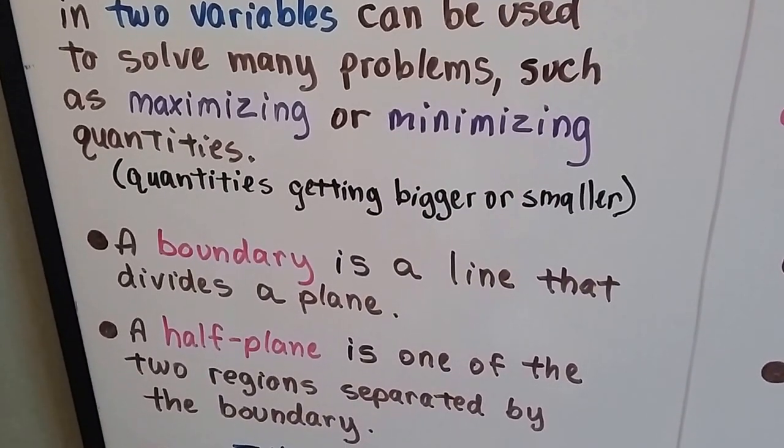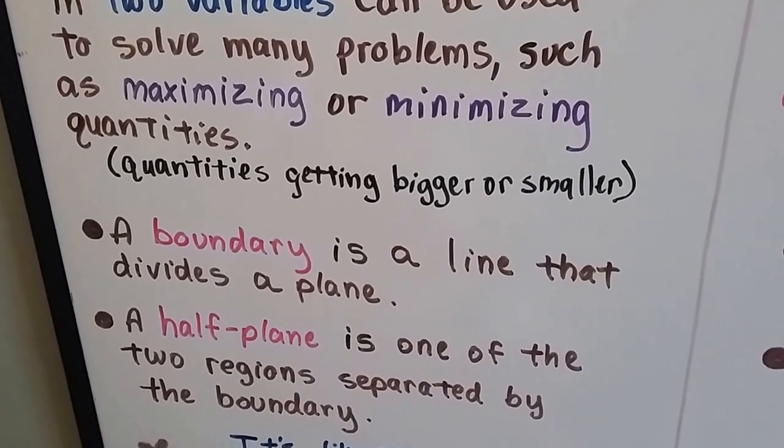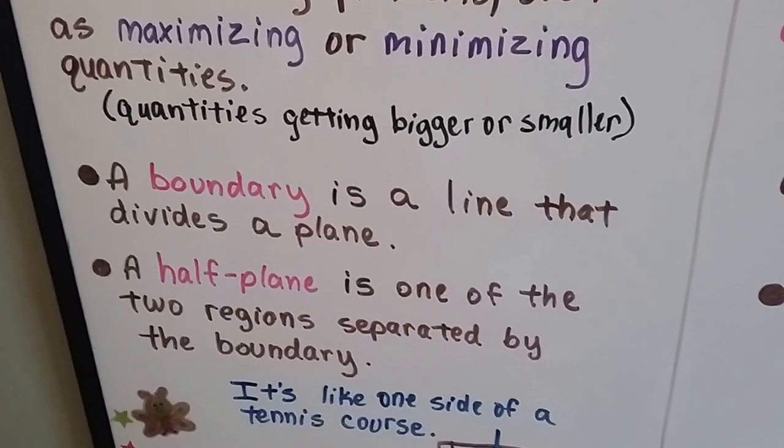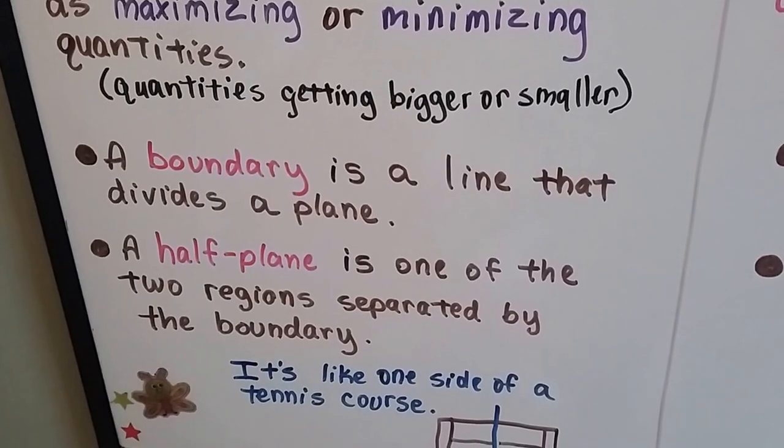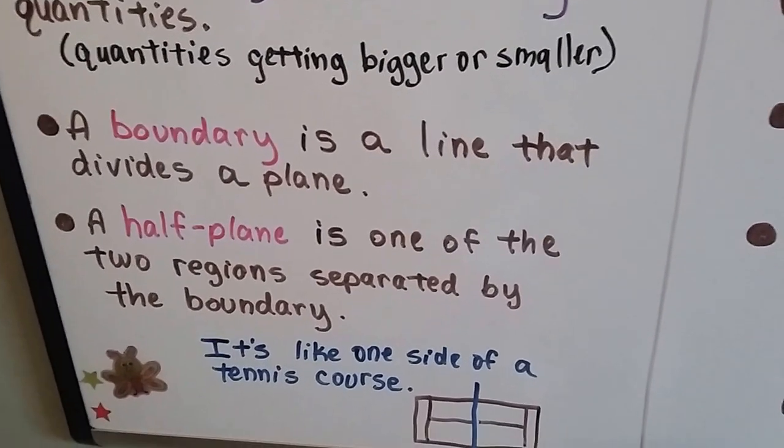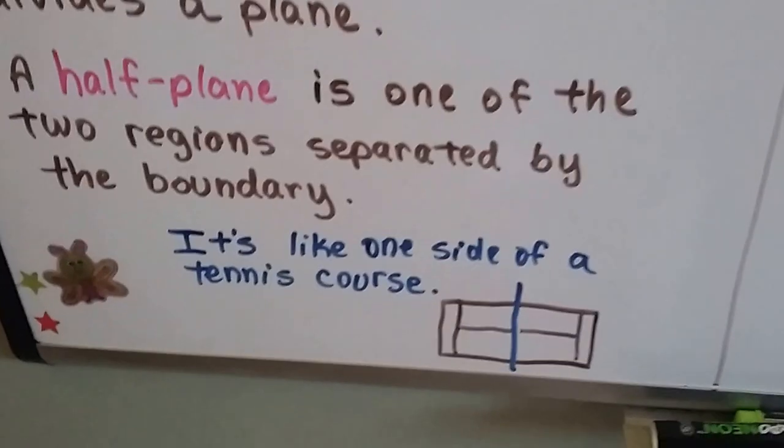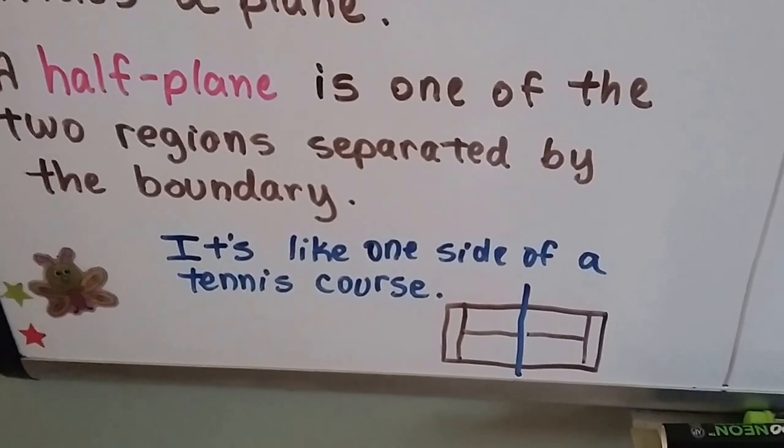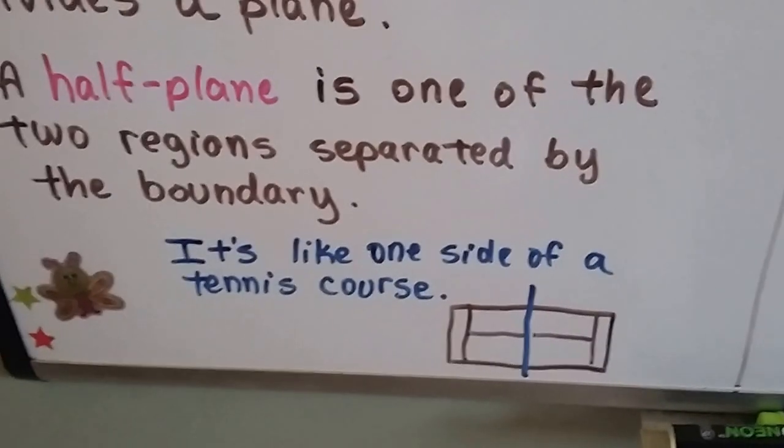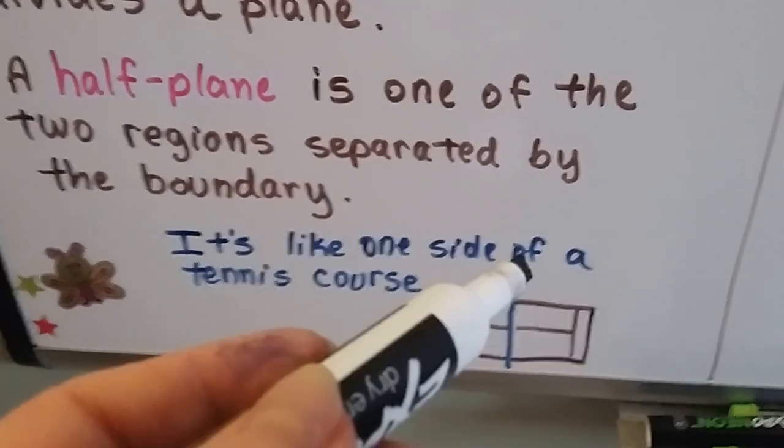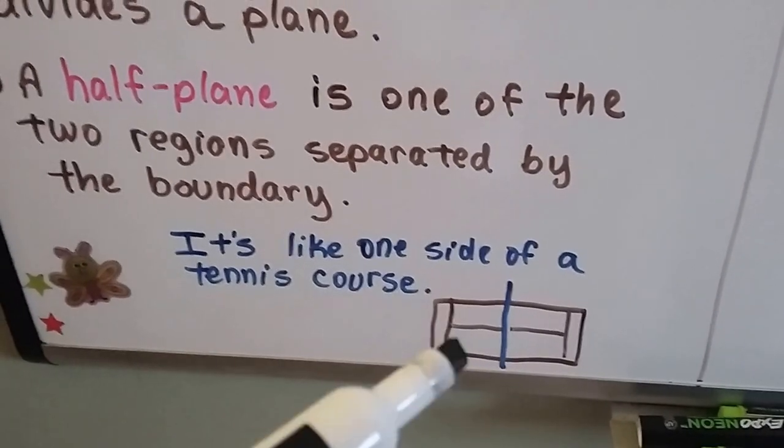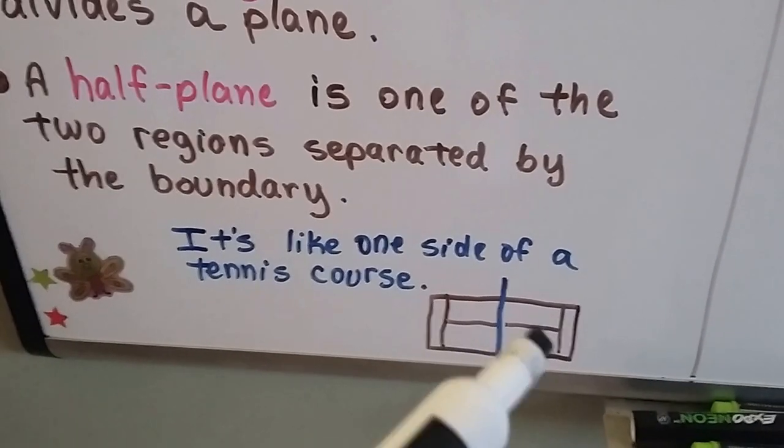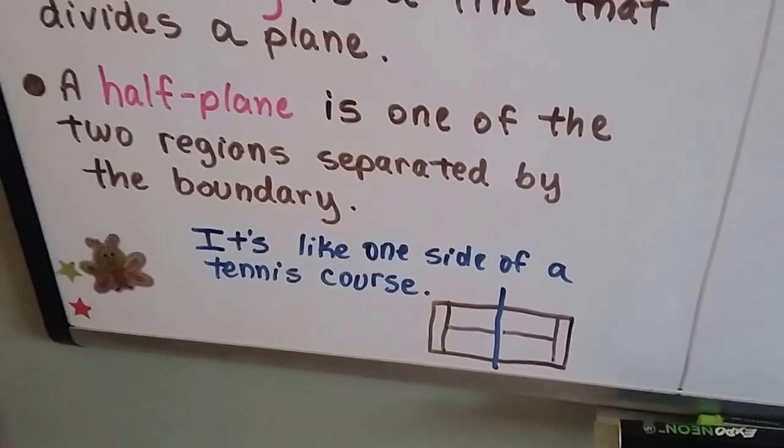A boundary is a line that divides a plane. It's a boundary line. A half-plane is one of the two regions separated by the boundary. So it's like a tennis court or a basketball court or even a football field. It's got a boundary line right down the center that's splitting it. And then that would be a half-plane or that would be the half-plane. It's one of the halves.